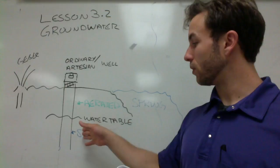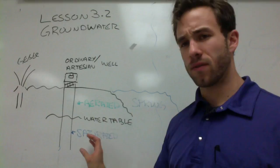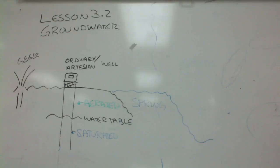Ordinary wells have a hole dug below the water table, but they use some sort of pump to push the water upwards so that we can access it for what we need. On the other hand, an artesian well has enough force below the earth that causes the water to press up without the use of a pump.